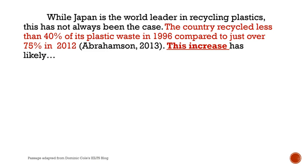One of the key ways to link ideas together is to use 'this' plus a summary word. Let's look at a few examples. Here the writer makes a statement: 'The country recycled less than 40% of its plastic waste in 1996 compared to just over 75% in 2012.' The next sentence links to the previous sentence by summarizing the key point: 'This increase.' It's not appropriate to just say 'this' — this what? We provide a summary word to help the reader easily understand the connection: 'This increase.'